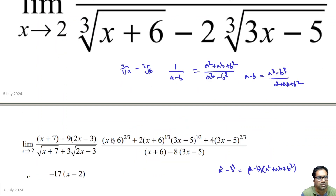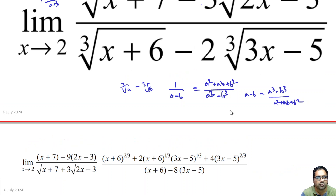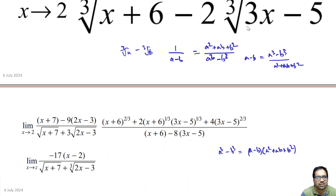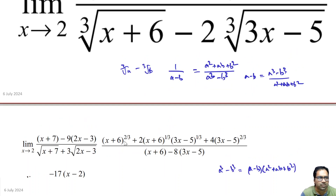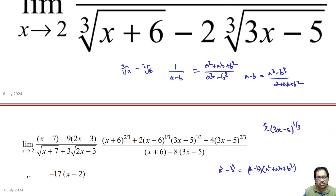The conjugate for the cube root denominator is: (x+6)^(2/3) plus 2·(x+6)^(1/3)·(3x-5)^(1/3) plus (3x-5)^(2/3) — that is a²+ab+b². Multiplying numerator and denominator by this conjugate, the denominator becomes a³-b³, which is (x+6) minus 8·(3x-5). The numerator becomes (x+6)^(2/3) plus the ab cross-term plus 4·(3x-5)^(2/3).